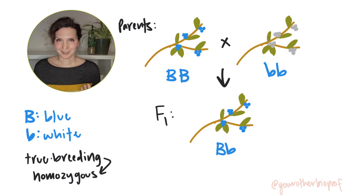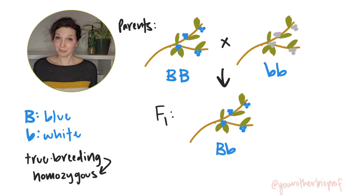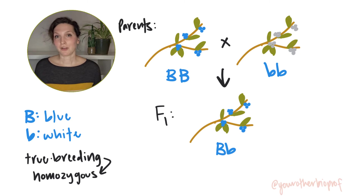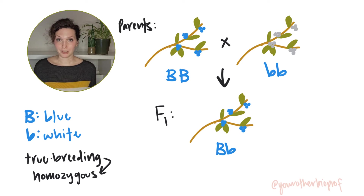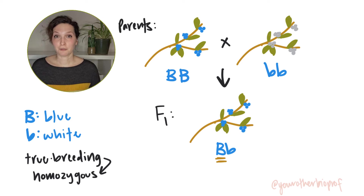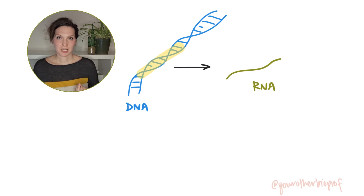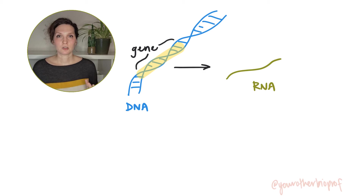Why is blue dominant and white recessive? Well, simply it's just because having one copy of the big B blue allele is enough to give us the full blue phenotype. Remember, genes are regions of DNA that are transcribed into RNA.